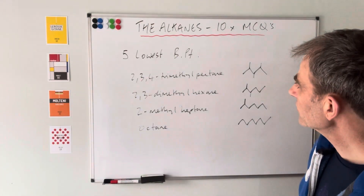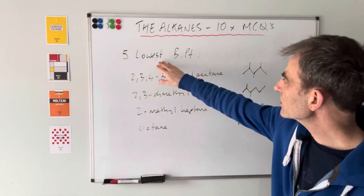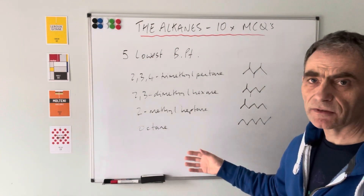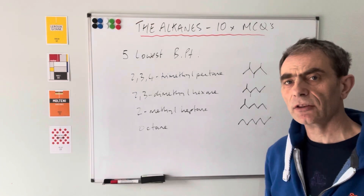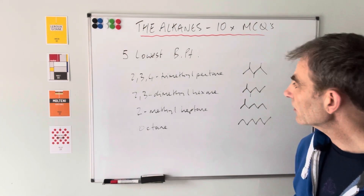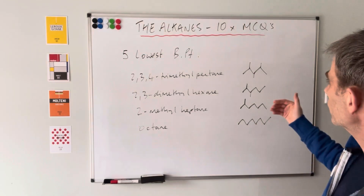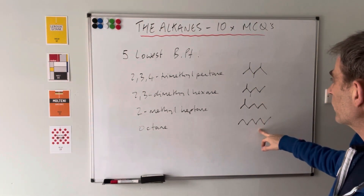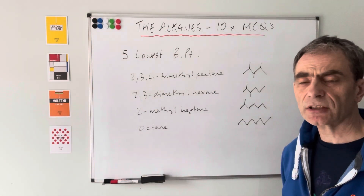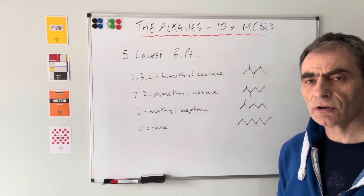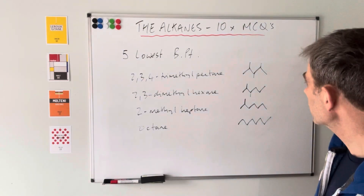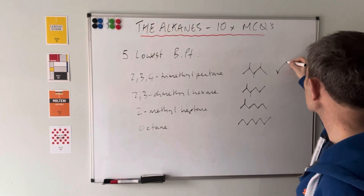Moving on to question five: which of these alkanes has the lowest boiling point? These all have eight carbons and the same number of hydrogens, so we can't base it on number of electrons. Since all atoms are the same, it comes down to structure. I've drawn the skeletal formulas for the four alkanes. For the lowest boiling point, we're looking for the most branching, because the intermolecular forces won't be as strong and less energy is needed to overcome them. This one here with the most branching has the lowest boiling point.